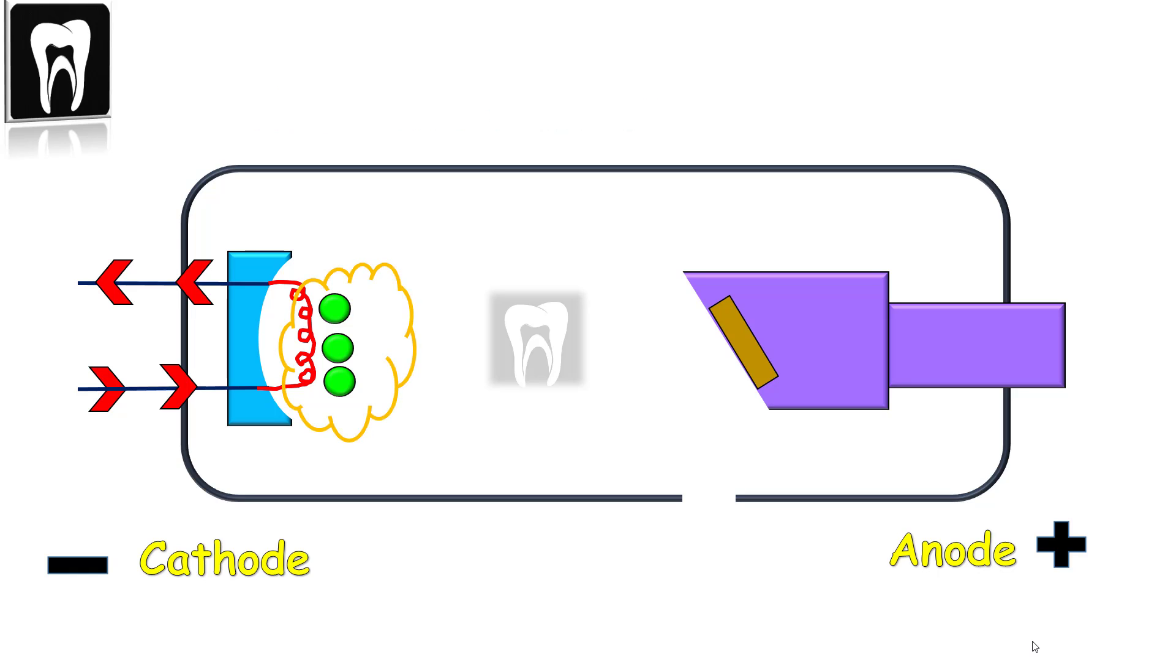These free electrons make a cloud called the space charge, because these negatively charged electrons are in this space. We have many negative electrons, and due to electrostatic repulsion, the electrons spread apart.